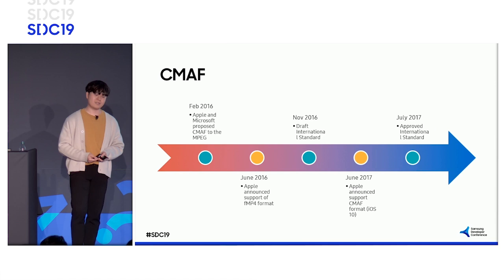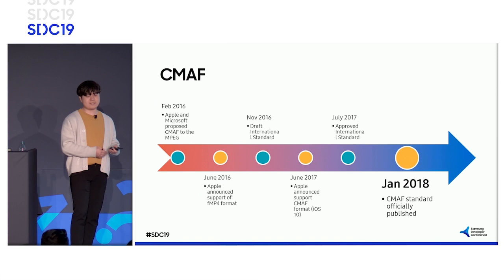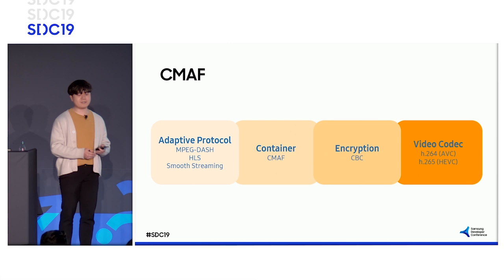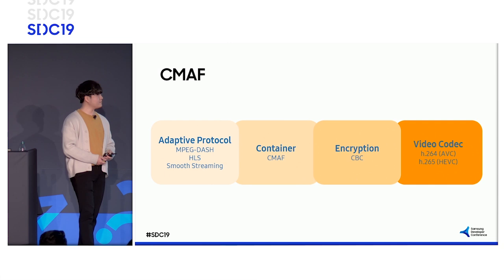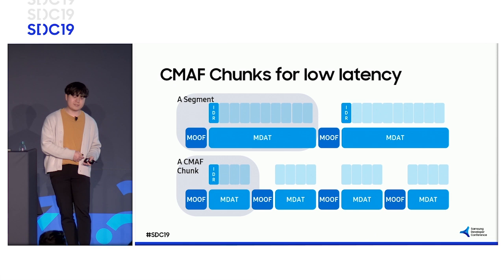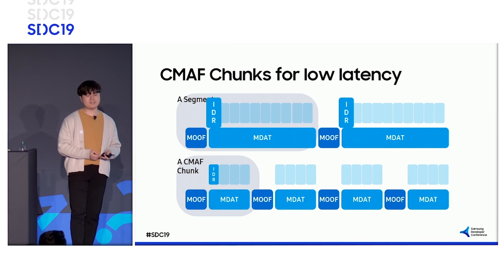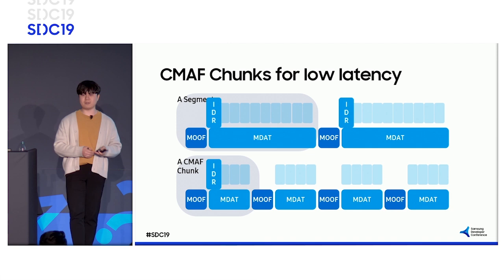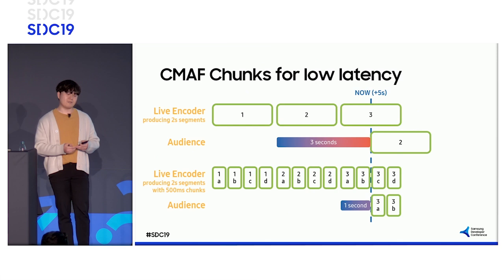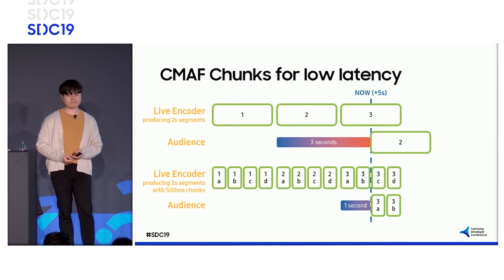To resolve these problems, the CMAF standard was officially declared last year, which is a common format for transmitting data. CMAF can cover various types of streaming protocols and DRMs as well. A CMAF chunk is a group of small video samples and there is a big difference from a regular segment. A segment has at least one I-frame, whereas in a CMAF chunk, you only have to consider the number of video frames. Thanks to CMAF chunk, you can deliver content to viewers more quickly even while making the third segment.